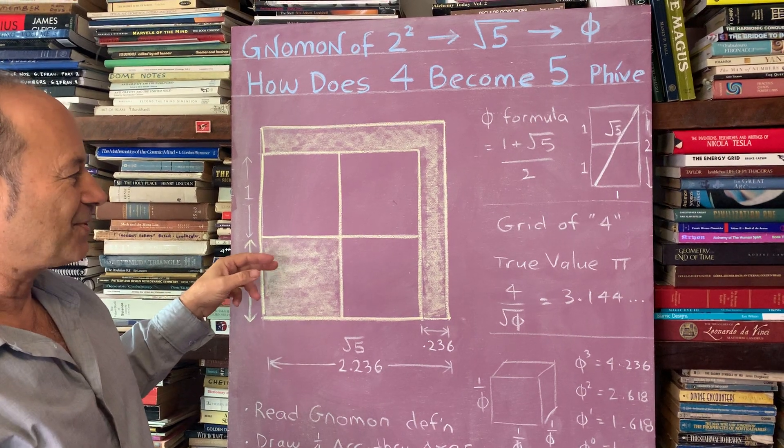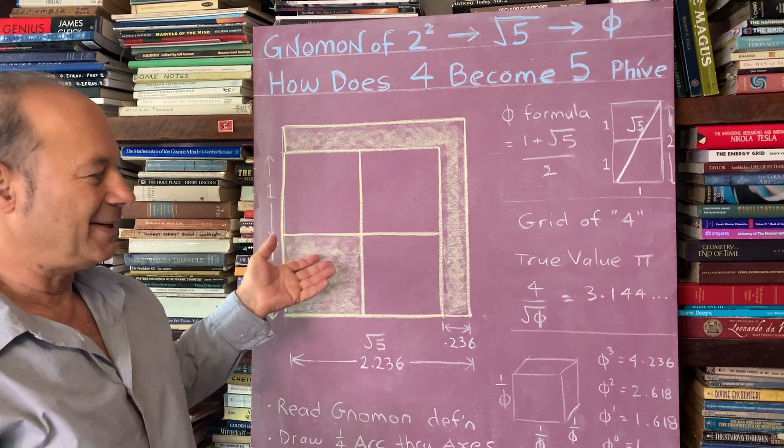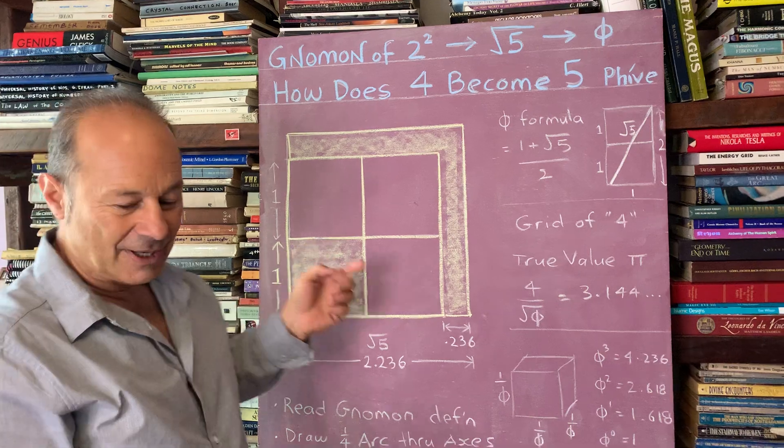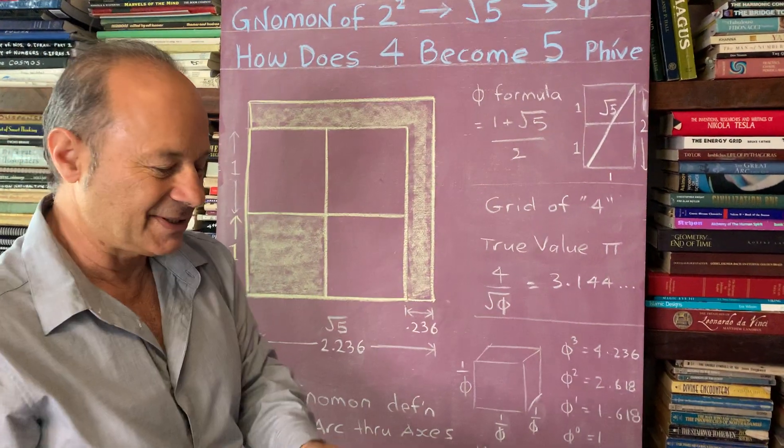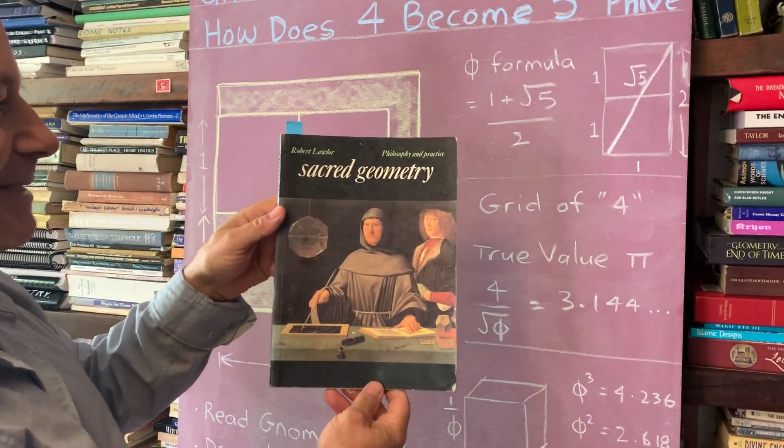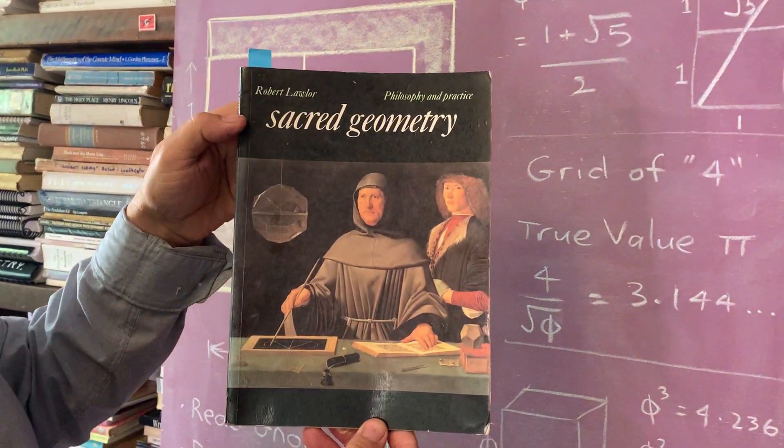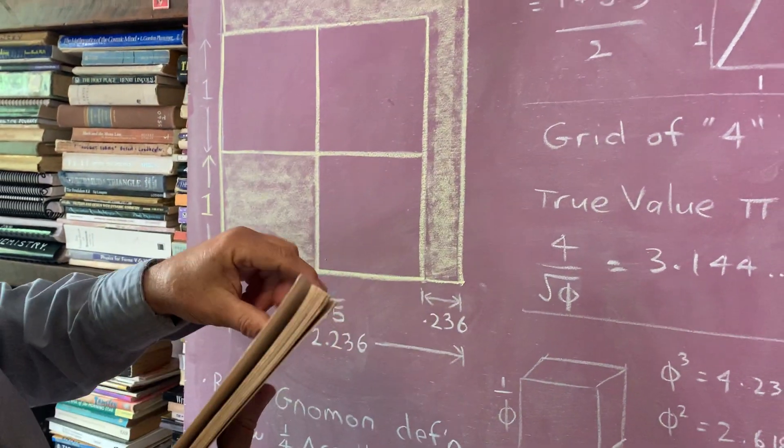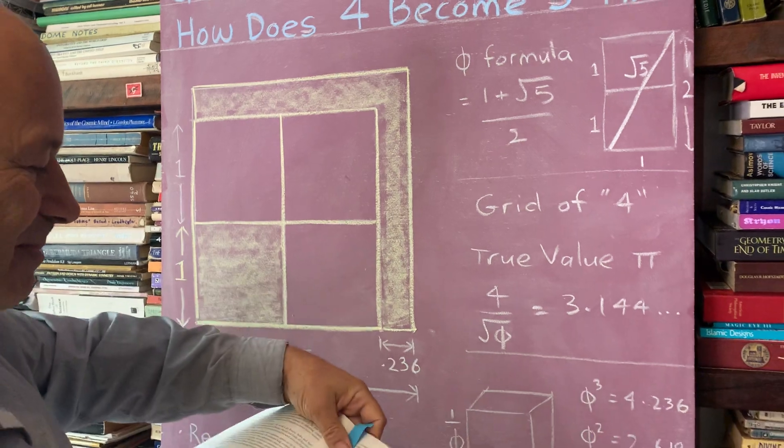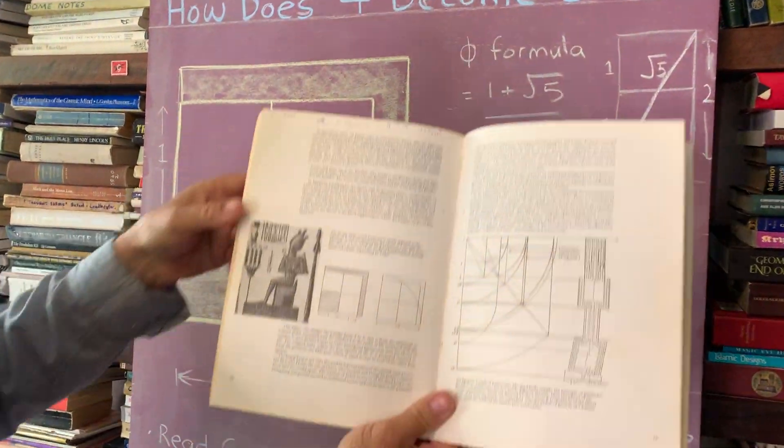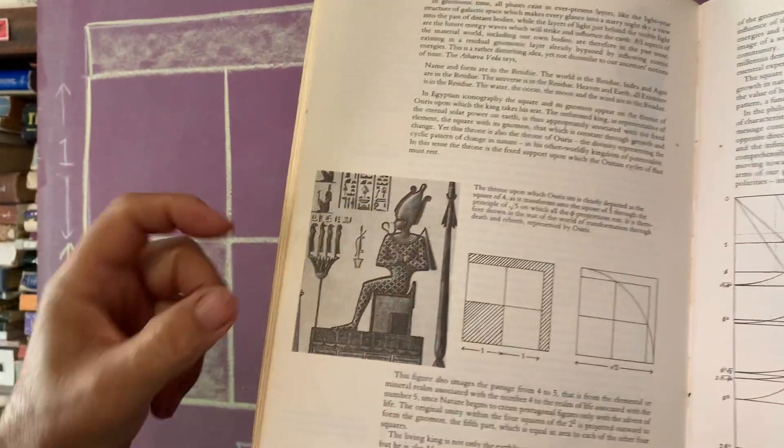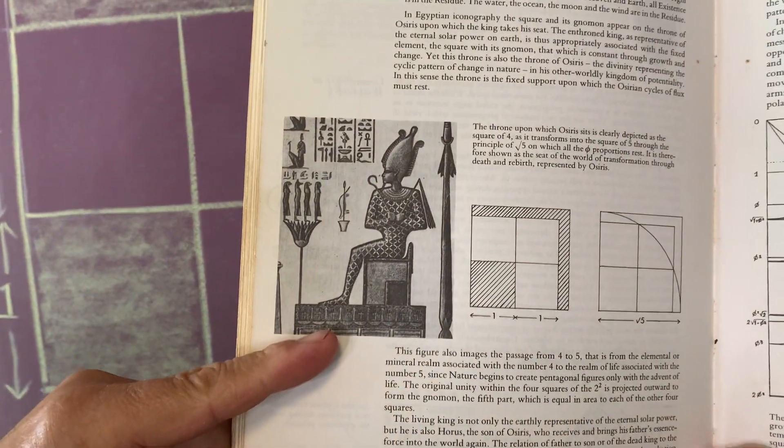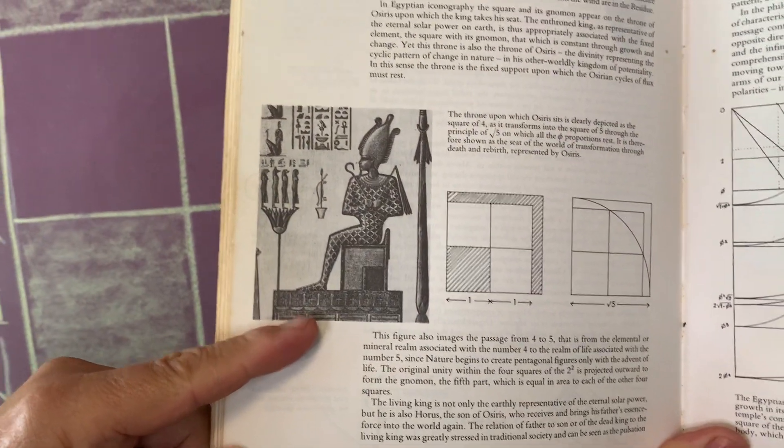This is quite interesting, because I'm going to show you what's embedded inside of this. First of all, I'd like to honor where I got this inspiration from. This is from a classic book by Robert Lawlor called Sacred Geometry. He did a chapter on Osiris' throne. Here he's showing that Osiris is sitting on a 4 by 4 with a gnomon.